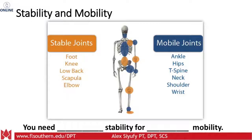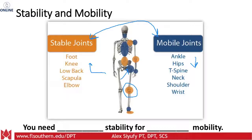Like other joints throughout the body, the hip exists within a biomechanical balance between mobility and stability. If one joint has decreased mobility, adjacent joints must compensate with increased stability. The hip is classified as a mobility joint, meaning that limited hip mobility typically creates problems at the knee or lumbar spine. We need proximal stability for distal mobility to perform at a high level.